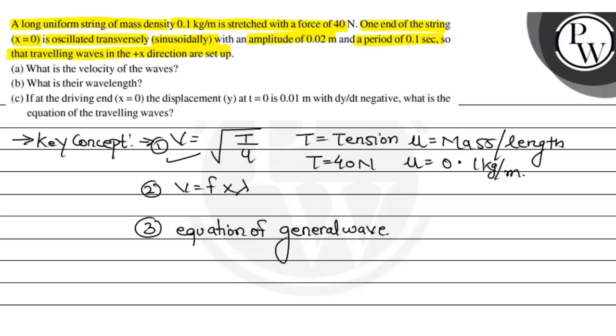That equation is y equals a sin omega t minus kx plus phi. Omega is called angular frequency, and t is time at any instant.